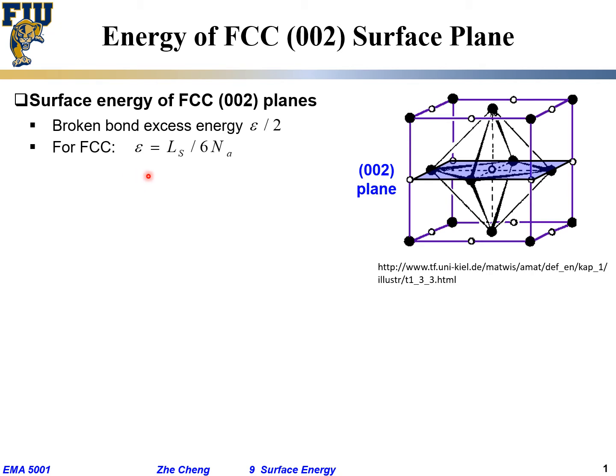That's what we have previously. What does epsilon mean? Bonding energy, bonding strength. What does Ls mean? So-called sublimation energy, from FCC solid crystal into single atom gas. In that process you break all the bonds, and the bonding energy and the sublimation energy is related by 6 Na. What does Na mean? Avogadro's number, because quite often we measure the sublimation energy per mole.